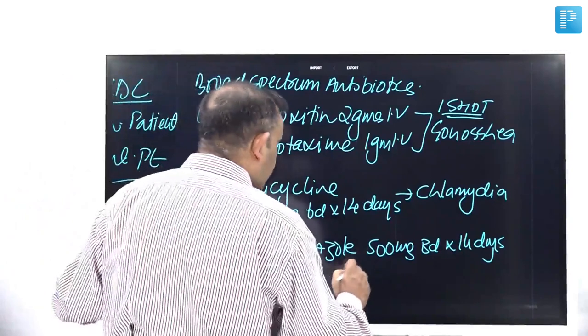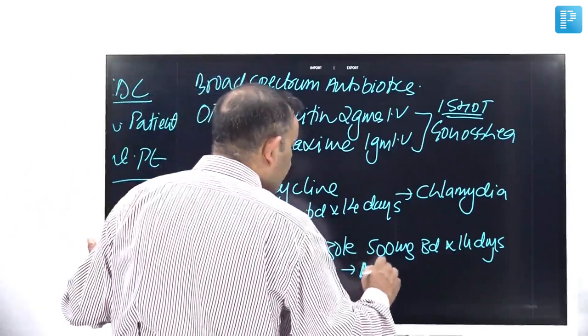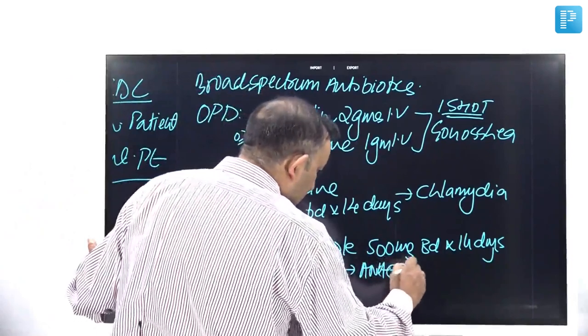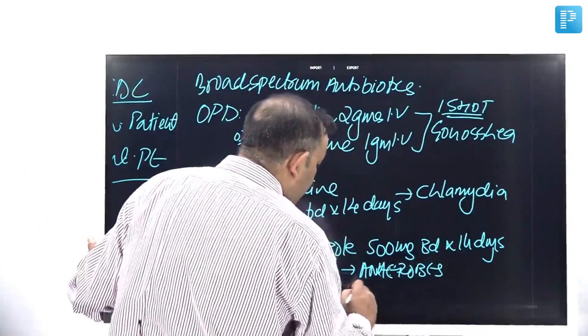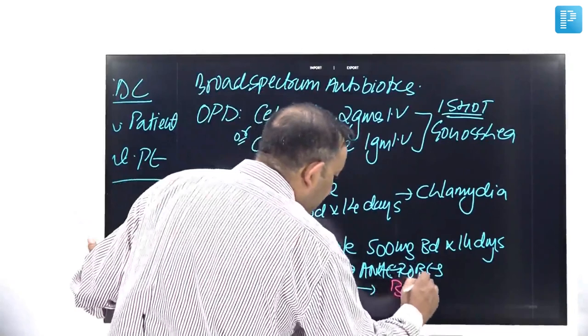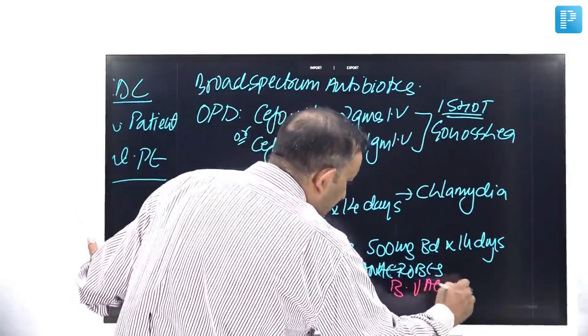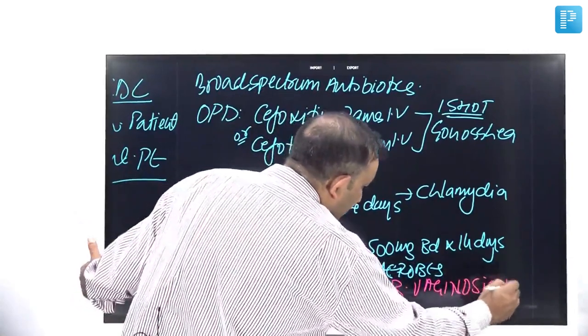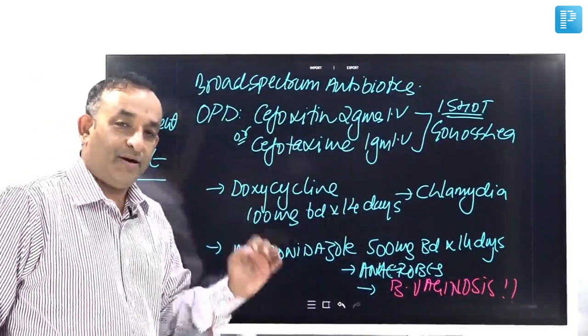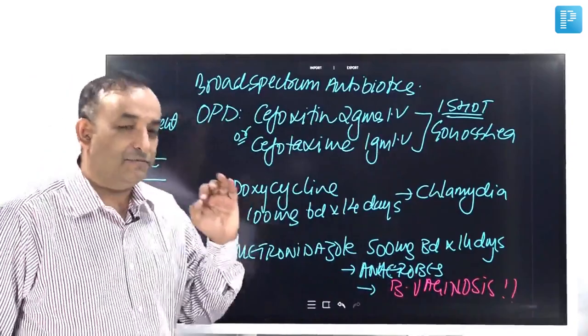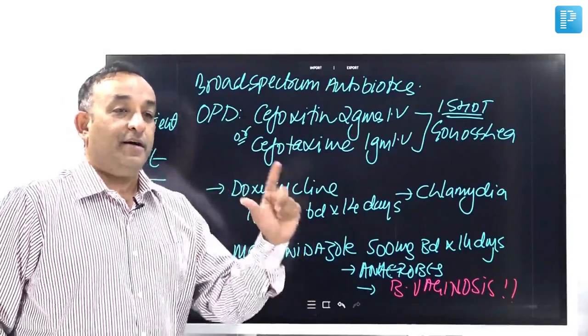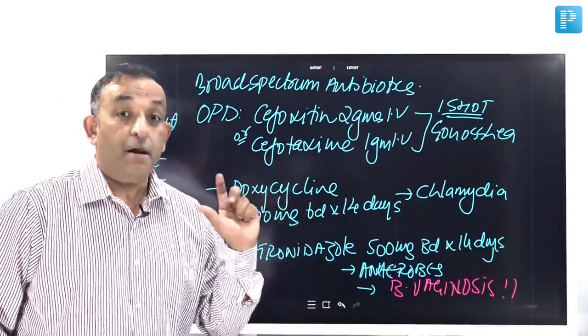Now, Metronidazole is given for the treatment of the anaerobes and it is also meant for the treatment of bacterial vaginosis. Please remember the exclamation is very important here. Bacterial vaginosis, I told you in the diagnosis of PID, it is a very common bug. It is a very important bug.